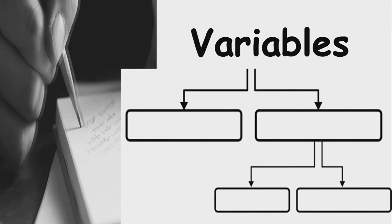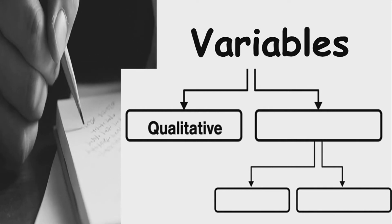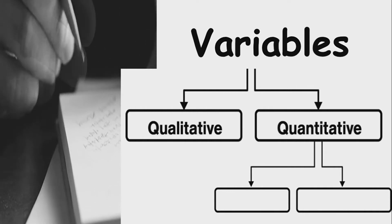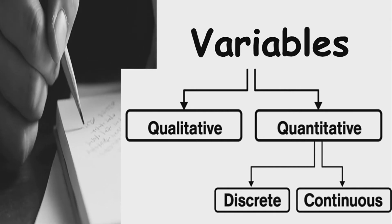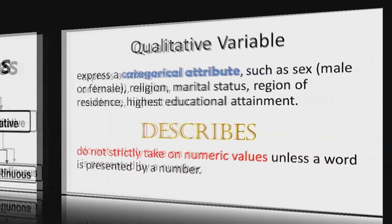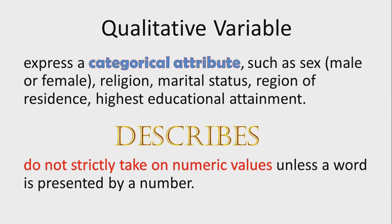Now let's take a look at the two types of variables. We have the qualitative variable and the quantitative variable. The quantitative variable is further divided into two types: discrete and continuous.